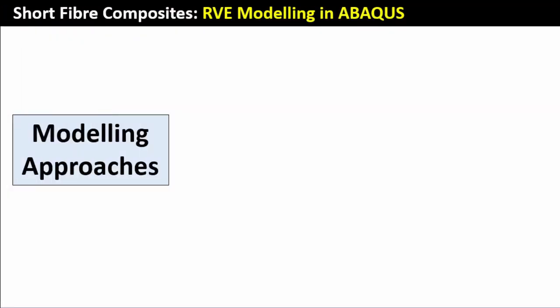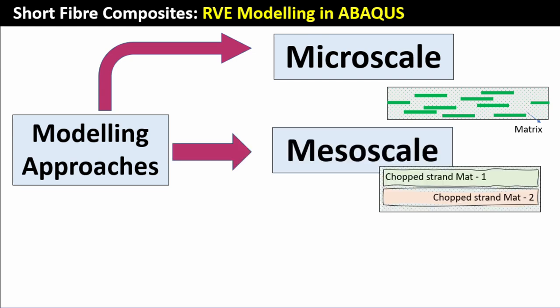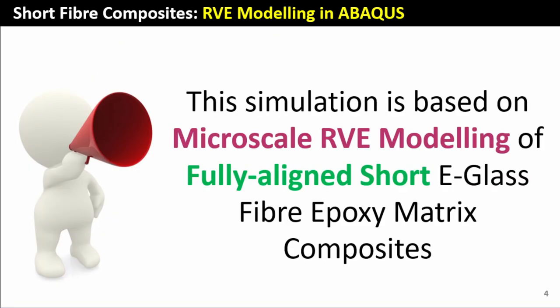The modeling approaches one can take could be a micro-scale approach where you individually model the fibers in their different positions, model the matrix, apply the right boundary conditions — probably periodic boundary conditions — to generate the stress-strain response. Another option is a mesoscale approach where you get the effective properties of a laminate, or in short fiber composite language, a chopped strand mat. Finally, there's a macro-scale approach where you homogenize the response. For this video, we're going to use micro-scale RVE modeling of fully aligned short E-glass fiber epoxy matrix composites.